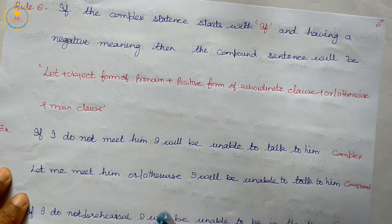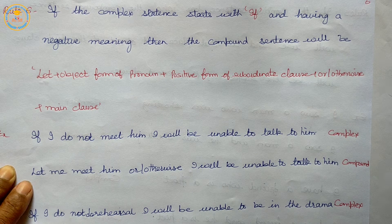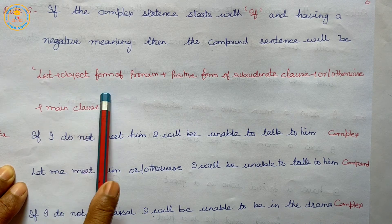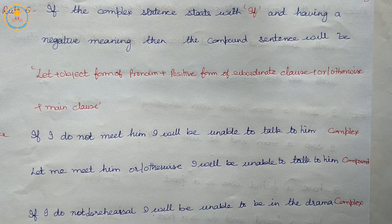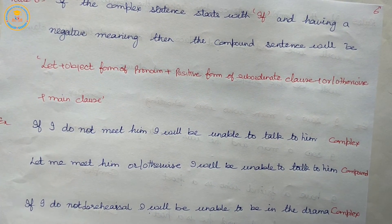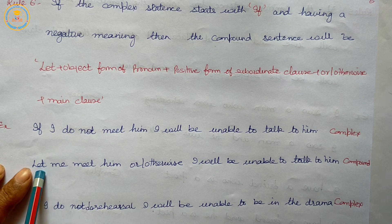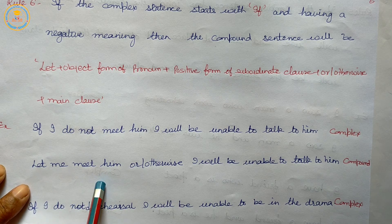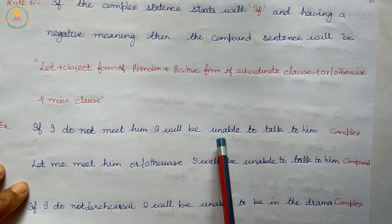Rule six: if the complex sentence starts with 'if' and has a negative meaning, the compound sentence will follow the structure: 'let' plus object form of pronoun, plus the positive form of the subordinate clause, plus 'or' or 'otherwise', plus the main clause.